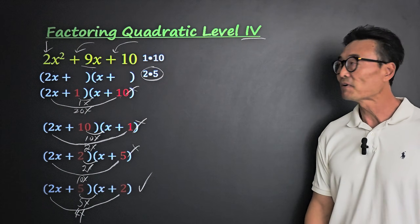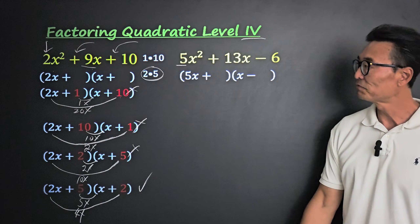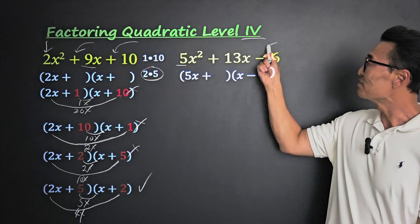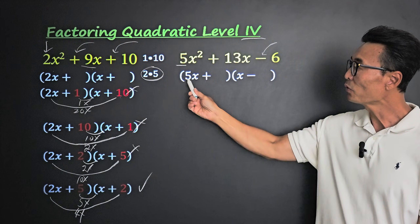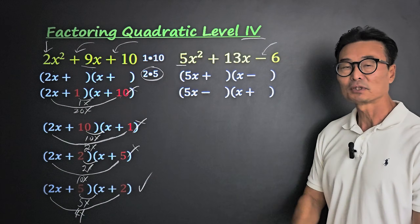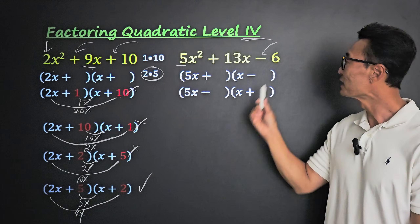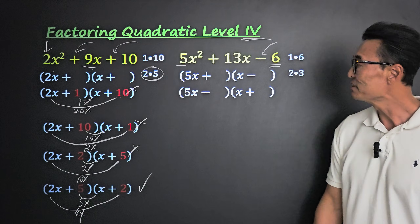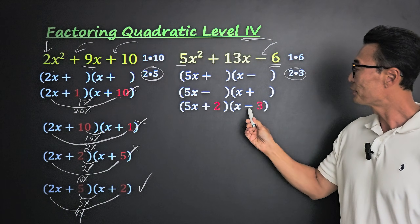For our second example, let's factor 5x squared plus 13x minus 6. The coefficient of x squared is 5, so we put 5x in the front and x in the back. Because the third term is negative, we put two opposite signs — plus and minus. When the coefficient of x squared is not 1, we need to consider both plus-minus and minus-plus arrangements, because it does make a difference.